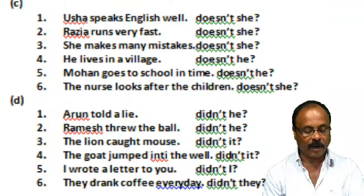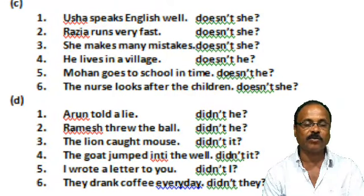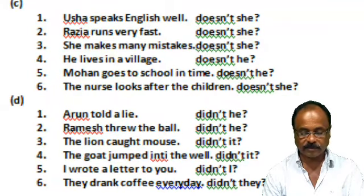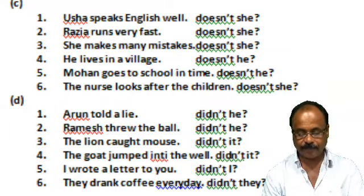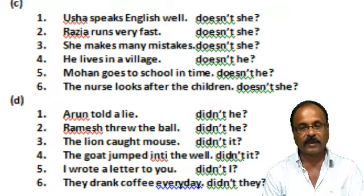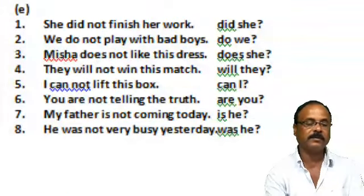Then Group D. 'Arun told a lie.' You see, here V2 begins to appear, so we have to take the help of 'did.' — 'Didn't he?' 'Ramesh hit the ball.' — 'Didn't he?' 'The lion caught the mouse.' — 'Didn't it?' 'The goat jumped into the well.' — 'Didn't it?' 'I wrote a letter to you.' — 'Didn't I?' 'They drank coffee every day.' — 'Didn't they?'